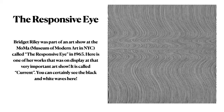Bridget Riley was part of an art show at the MoMA, the Museum of Modern Art in New York City. This art show was called The Responsive Eye and it was held in 1965. Here is one of her works on display at that important show — this artwork is called Current. You can certainly see the black and white waves here. It reminds me of the current in water.